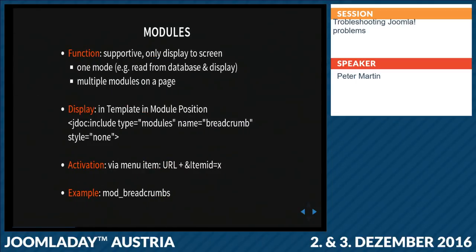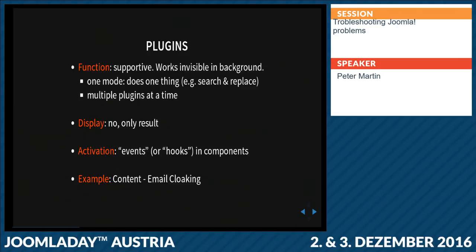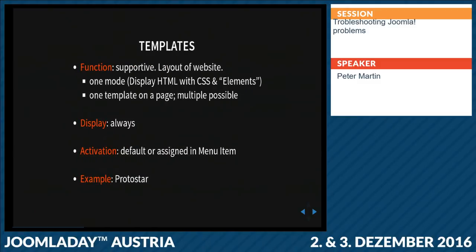Modules work with the item ID, which is the menu item. If you have a problem on certain pages, first switch on the module positions in the template to find which template positions you are using, and that way find which module you are using. Disable a lot of them and enable them one at a time to see what the problem is. With templates, you can have multiple templates but only one on a page at a time. If you run into template problems, just switch to Protostar, the default Joomla template. If the problem is still there, it's probably not a template problem.